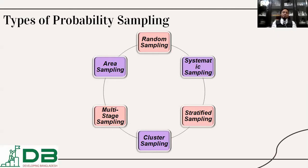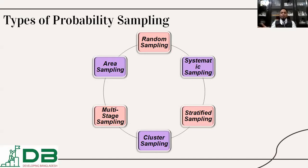Multi-stage sampling: stratified sampling is also a form of multi-stage sampling. For example, first we select age groups from the 100 population — such as 15 to 25, 25 to 40, and 40 to 55. From each group, we again select 50% women and 50% men. From the women, we can select unmarried and married women, and from the men, unmarried and married men. This layered selection process is called multi-stage sampling.